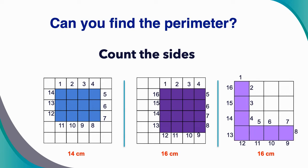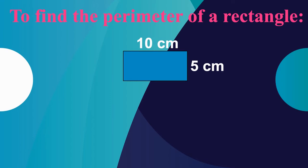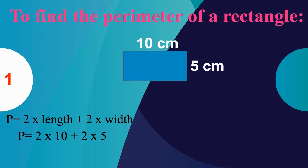What do we do when we're not given square grids? To find the perimeter of a rectangle, there are two things we can do. Method one: use the formula P = 2 × length + 2 × width. Our rectangle has a length of 10 centimeters and a width of 5 centimeters, so our equation is 2 × 10 + 2 × 5. Remember, we can use order of operations.